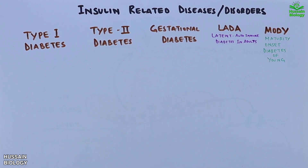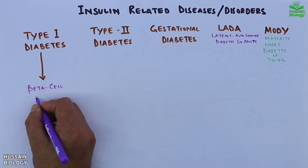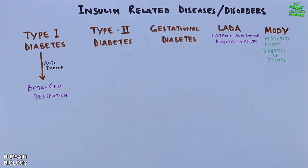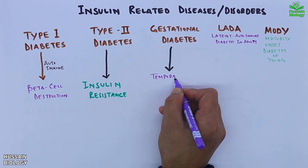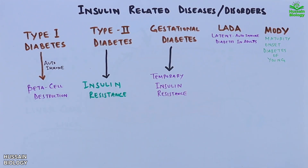Type 1 diabetes is an autoimmune disease where destruction of beta cells compromises insulin production. Type 2 diabetes involves insulin resistance — the body cells become less responsive to insulin even if insulin is still being produced. Gestational diabetes causes temporary insulin resistance during pregnancy, and this condition usually resolves after delivery.